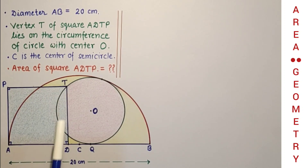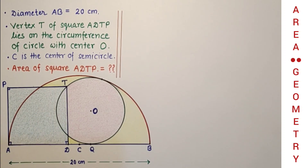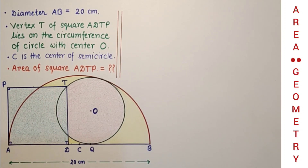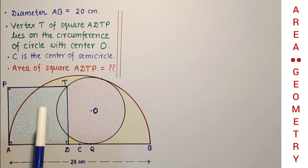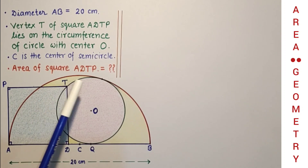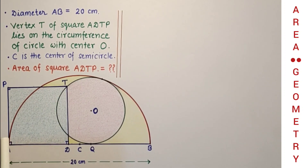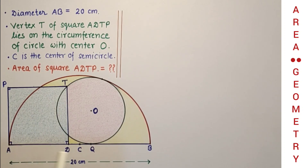AT will be the diagonal of the square, and AT will also be tangent to the smaller circle at point T, since T is the point of contact and lies on the circle. And AT is equal to AQ, since from an exterior point tangents drawn to a circle are equal. So AT equals AQ. We have to find the side of the square.